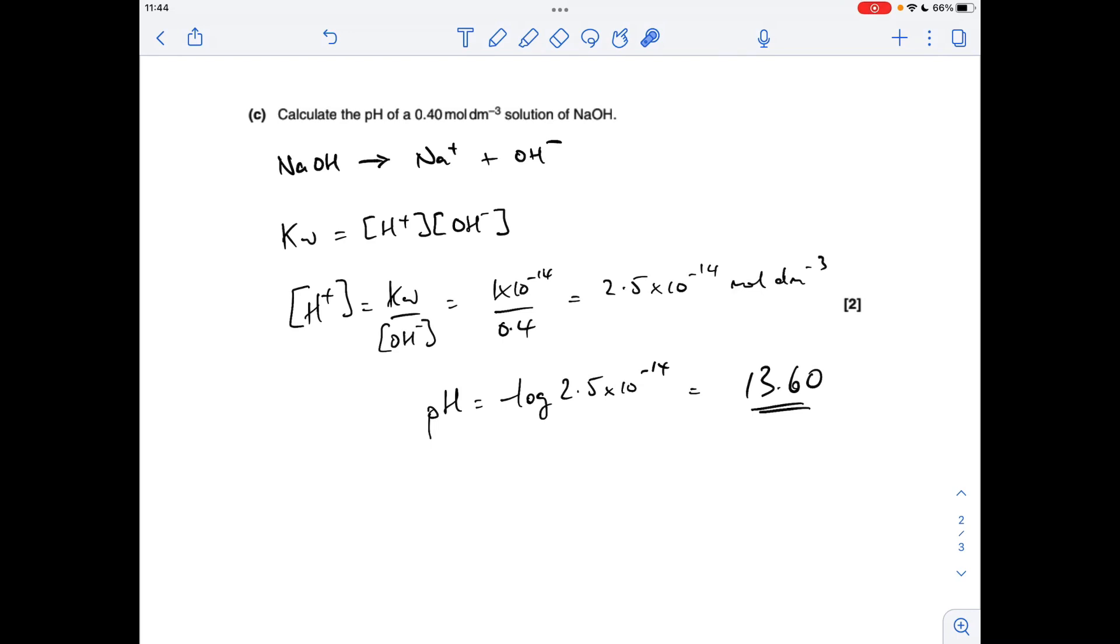So obviously the rearranged KW expression makes H plus concentration the subject. So KW, 1 times 10 to the minus 14, we're assuming it's 25 degrees C. OH minus concentration is 0.4. So that gives us an H plus concentration of that. Minus log that, we get a pH of 13.60.